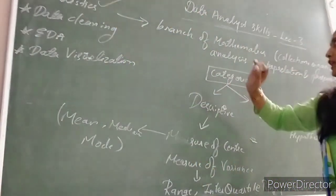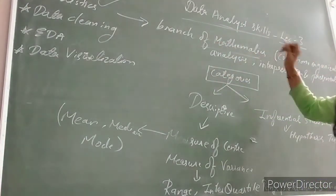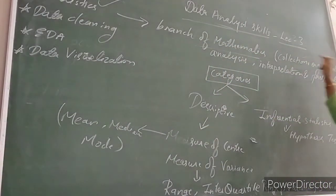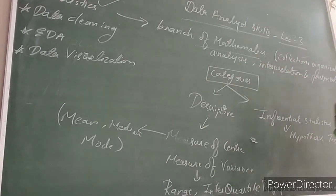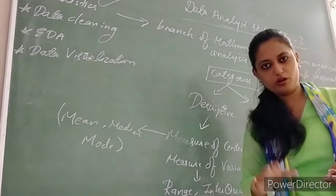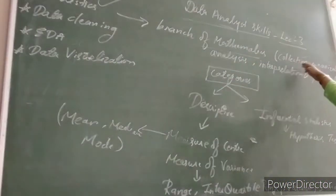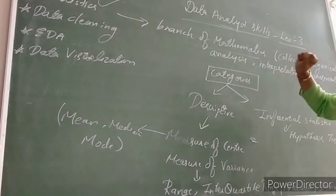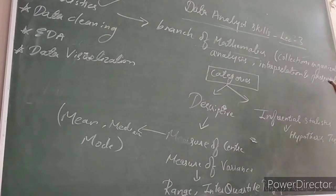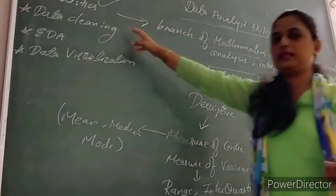First of all, we will look at statistics. Basically, statistics is a branch of mathematics in which there is collection, organization, analysis, interpretation, and presentation. This whole branch of mathematics — dealing with collection, organization, analysis, interpretation, or presentation — is what we call statistics.